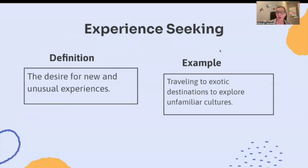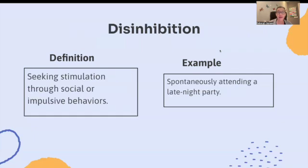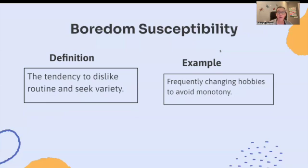Thrill-adventure seeking: the desire for exciting and risky activities. For example, engaging in extreme sports like rock climbing or skydiving. Disinhibition: seeking stimulation through social or impulsive behaviors. For example, spontaneously attending a late-night party. Boredom susceptibility: the tendency to dislike routine and seek variety. For example, frequently changing hobbies to avoid monotony.